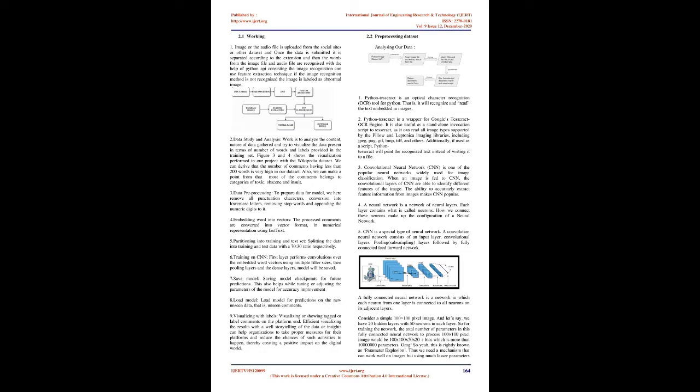3. Data pre-processing: to prepare data for the model, we remove all punctuation characters, convert into lowercase letters, remove stop words and append numeric digits to it. 4. Embedding word into vectors: the processed comments are converted into vector format in numerical representation using FastText. 5. Partitioning into training and test set: splitting the data into training and test data with a 70:30 ratio respectively. 6. Training on CNN: the first layer performs convolutions over the embedded word vectors using multiple filter sizes, then pooling layers and the dense layers, and the model will be saved. 7. Save model: saving model checkpoints for future predictions. This also helps while tuning or adjusting the parameters of the model for accuracy improvement.